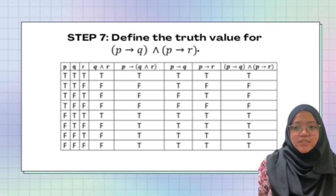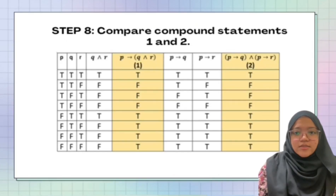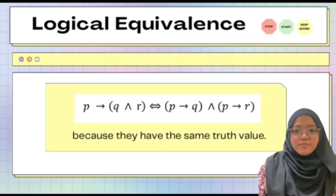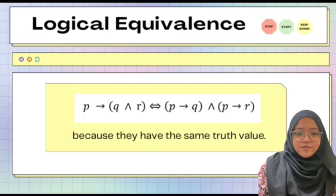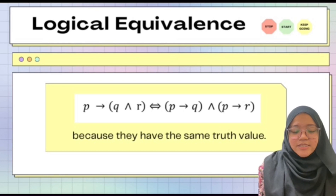Step seven is to define the truth value for (P → Q) ∧ (P → R): T, F, F, F, T, T, T, T. After that, we compared the two statements. As we can see, the truth values for both statements are the same. So we can conclude that P → (Q ∧ R) is equivalent to (P → Q) ∧ (P → R) because they have the same truth values.